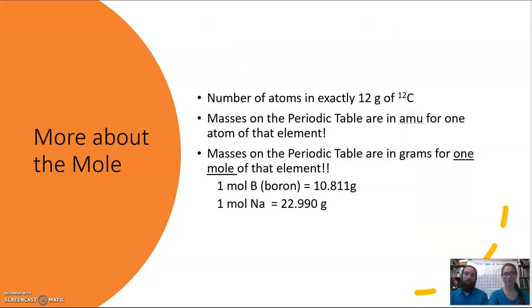All right, so more about the mole. Where did it come from? It is the number of atoms in exactly 12 grams of carbon 12. And what this does is it makes the masses that are on the periodic table that are in AMU now into grams. So if we have 12 AMU is equal to 12 grams, then anything in AMU on the periodic table is going to be also equal to grams if you have one mole of it. So AMU is for one molecule, atom, that kind of thing. If you have one mole of them, then now it's in grams.